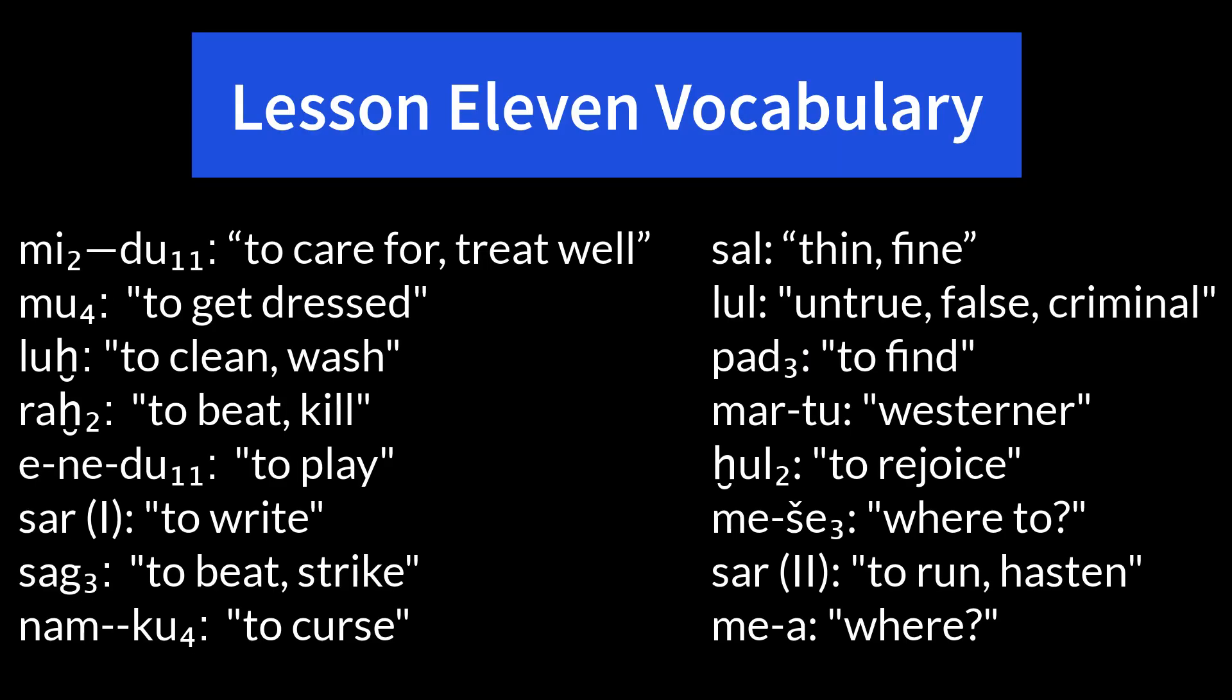The vocabulary for lesson 11: me, 'to do'; du₁₁, 'to care for, treat well'; mu₄, 'to get dressed'; luḫ, 'to clean or to wash'; ra₂, 'to beat or to kill'; and du₁₁, 'to play.' Šar, meaning one, 'to write'; saĝ₃, 'to beat or to strike'; nam-kú₄, 'to curse'; sal, 'thin or fine'; lul, 'untrue, false, or criminal.'